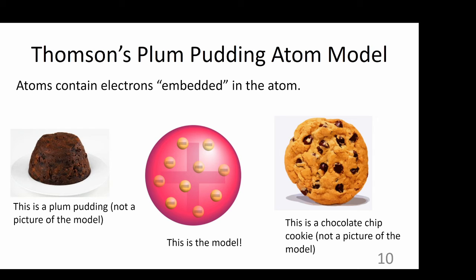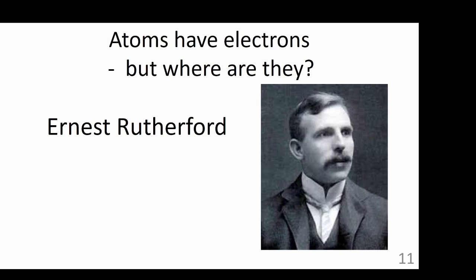Remember, the plum pudding and chocolate chip cookie dough are not models of the atom. They are just analogies to help you remember the features of the model. Now that Thompson had provided evidence of electrons, the next major mystery to solve was, where are they? This leads us to Ernest Rutherford.